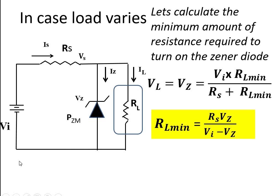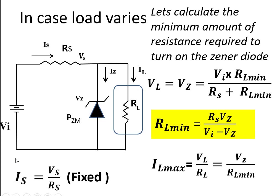When the resistance is minimum, naturally the current flowing through it would be maximum. So we can calculate IL max through this formula. Now keeping this in mind that Vi is constant, only RL is varying. Vi is constant, so Is would be fixed. Is can be calculated like this: Vs upon Rs. It's a fixed value as of now.